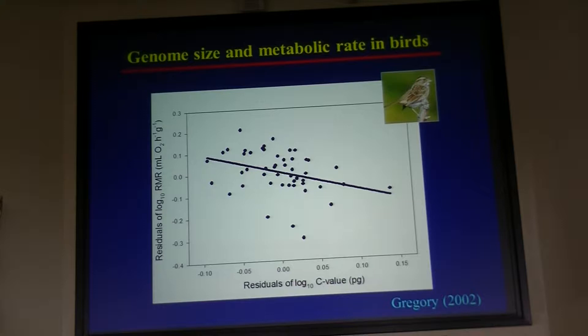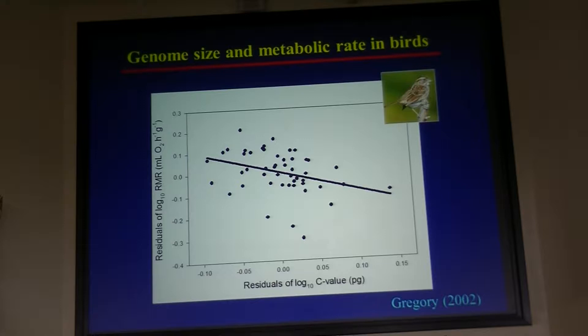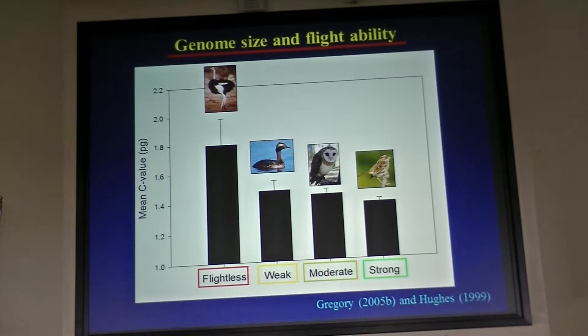One of the ones discussed a lot more is the relationship with metabolic rate, or things like flight ability or other things contingent on metabolic capacity. Here you're looking at resting metabolic rate measured as mass-specific oxygen consumption versus genome size — mass-corrected, so body size differences are taken out. And even though there's only a two-fold difference in genome size across birds, you still see this inverse correlation between genome size and metabolic rate. People have looked at this and tried to see if it corresponds to actual differences in things like flight ability.